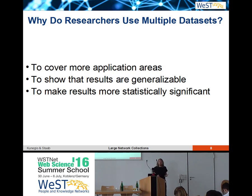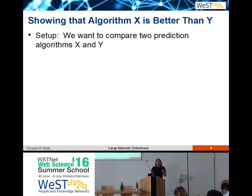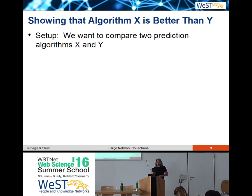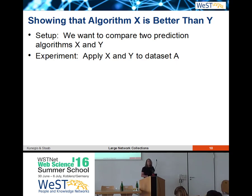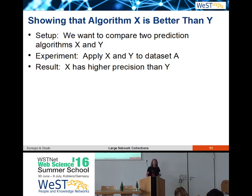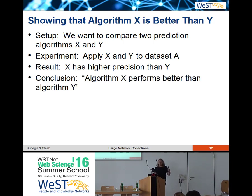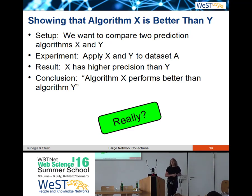Maybe you want to make your results statistically significant. Let's say I'm writing a paper and inventing a new algorithm — call it X — and I want to prove it's better than the baseline algorithm Y. I get a dataset A, apply both algorithms, and find that X has higher precision than Y on dataset A. So X works better on this one dataset. I can write my paper saying X performs better than algorithm Y. But is this really a good paper if it's based on one dataset?